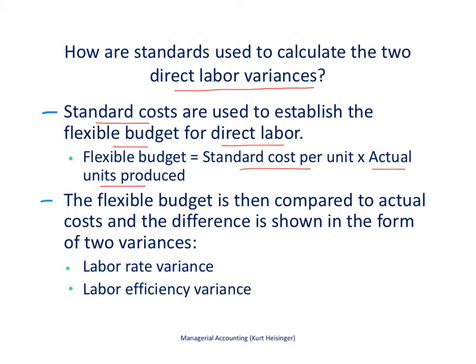The flexible budget is not the same as the master budget. The master budget is the standard cost per unit times the estimated or budgeted units to be produced. The flexible budget is prepared after the fact, looking back in time — knowing that we produced a certain number of units, we figure out what we would have expected the costs to be. The flexible budget is then compared to actual costs, and the difference is shown in the form of two variances.